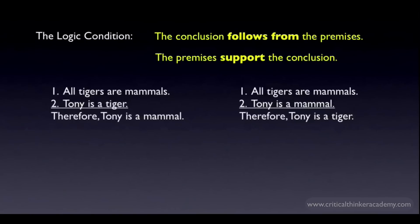These two arguments give examples of good logic and bad logic. In the argument on the left, the conclusion clearly follows from those premises: if all tigers are mammals and if Tony is a tiger, then it follows that Tony is a mammal. In the argument on the right, the conclusion doesn't follow. If all tigers are mammals and if Tony is a mammal, we can't infer that Tony is a tiger. Those premises may be true, but they don't support the conclusion.